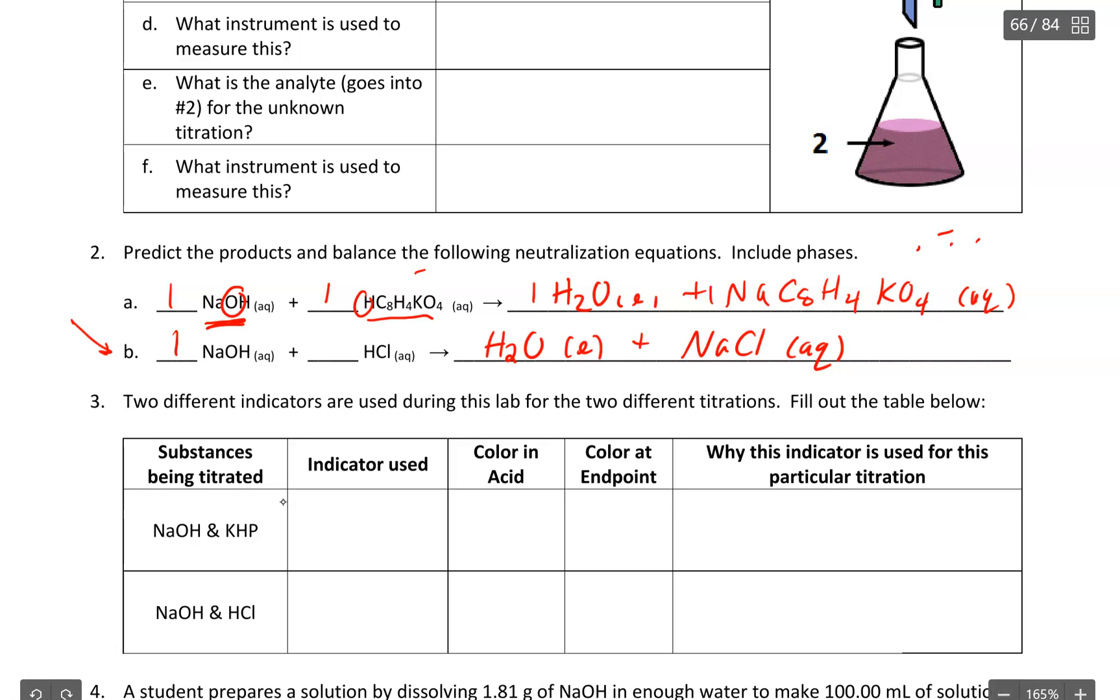Again, we end up with coefficients of 1 across the board. And you can write them in or not. If there's no coefficient, it's of course assumed that it is a coefficient of 1.